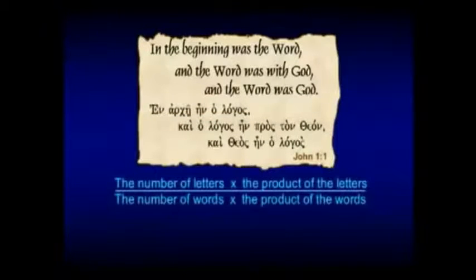And you do the same thing we did with the Genesis passage: the number of letters times the product of letters divided by the number of words times the product of words, you get E to four decimal places.